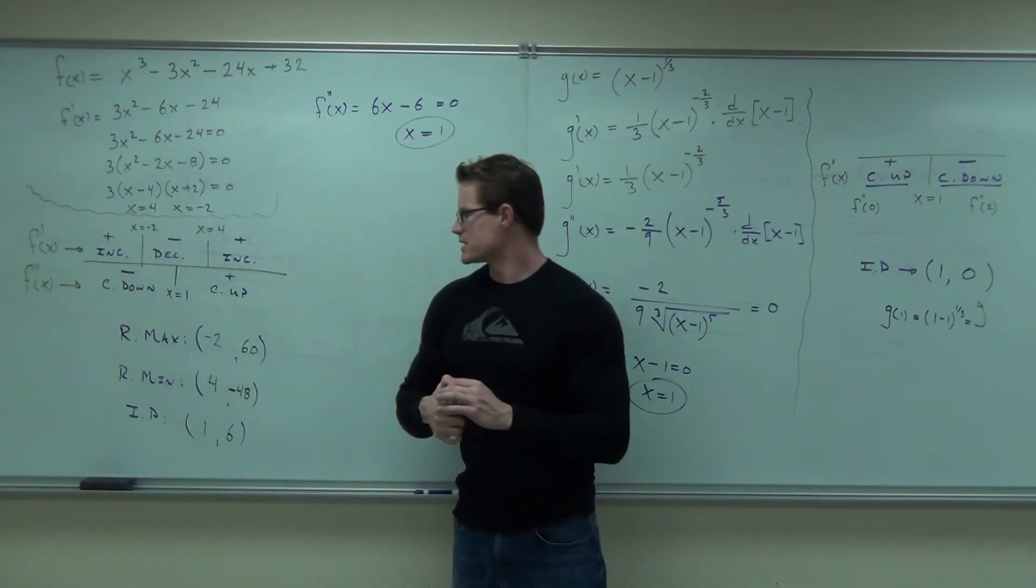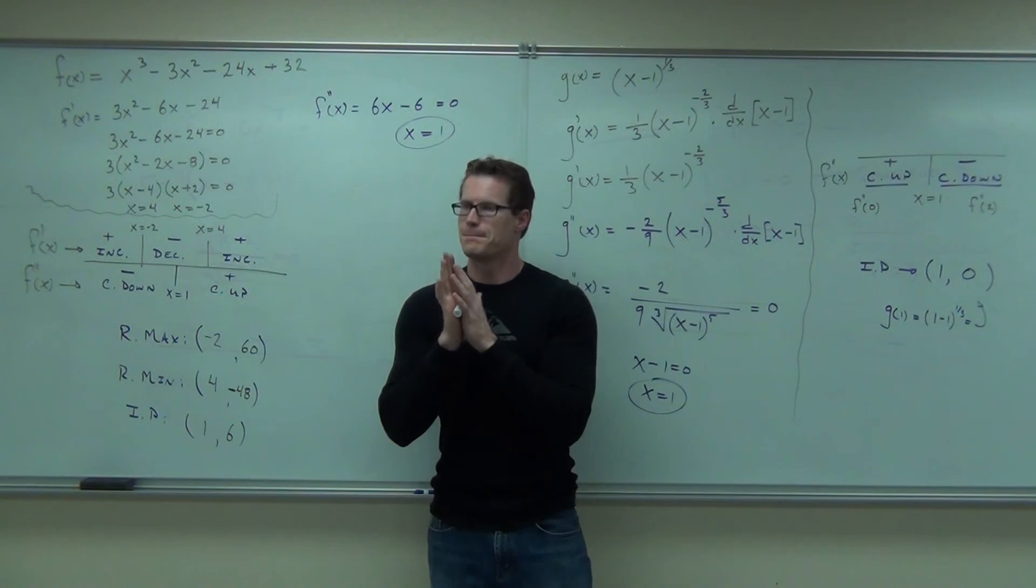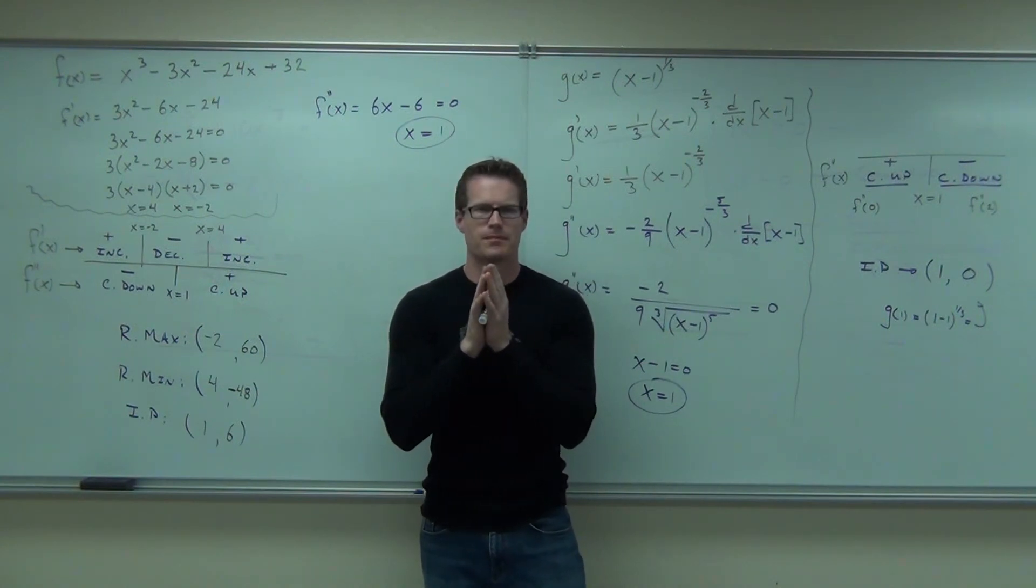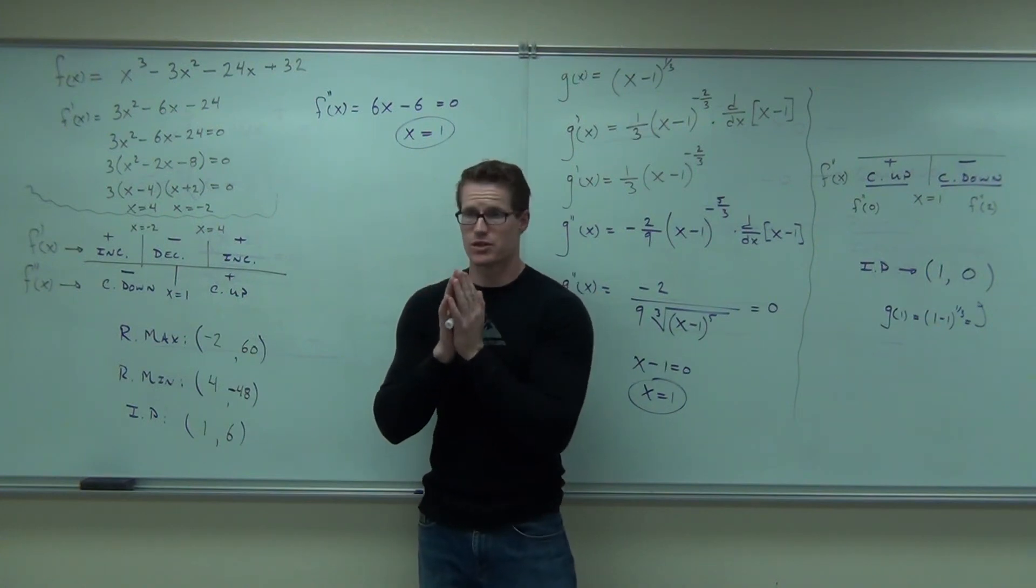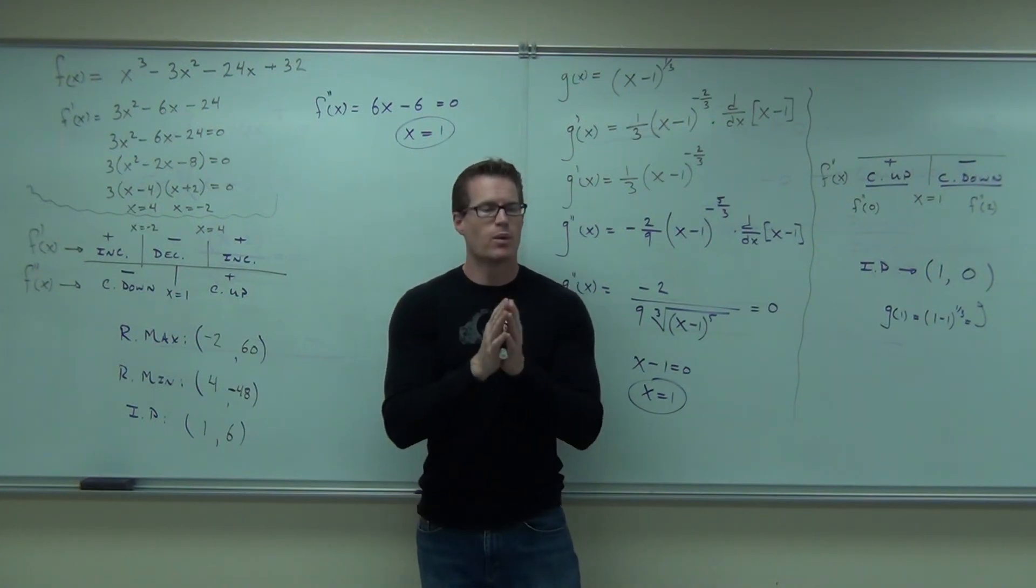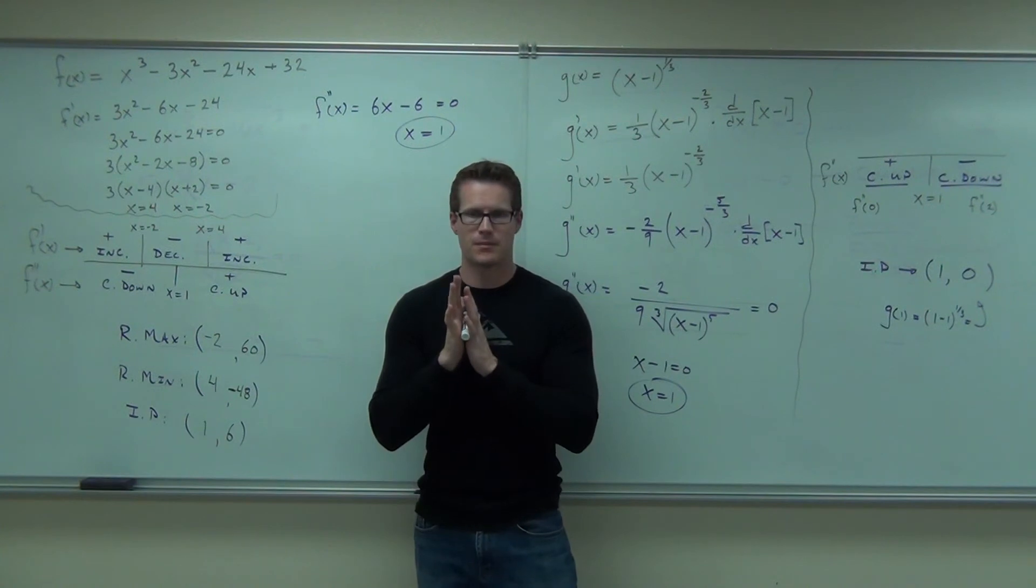Tell me, what is my relative maximum? What is it, though? 60. 60 is the relative max. Where does it occur? At x equals negative 2. What's the relative minimum? Good. Where does that occur? At x equals 4. Cool.